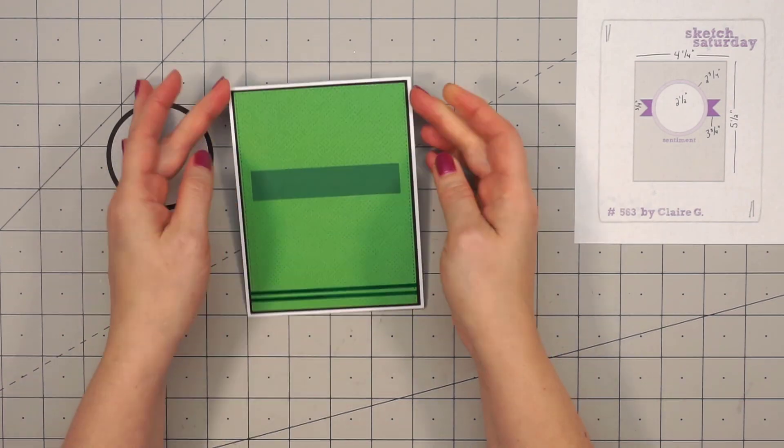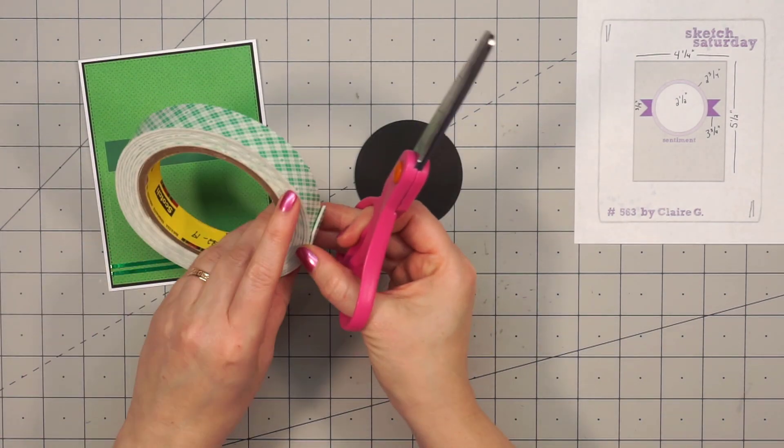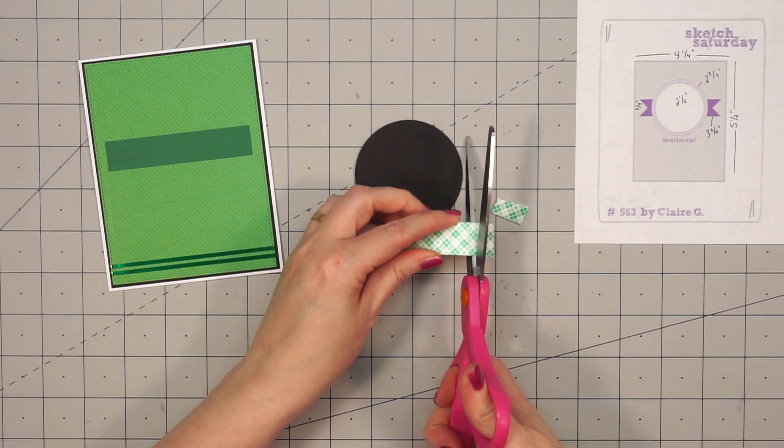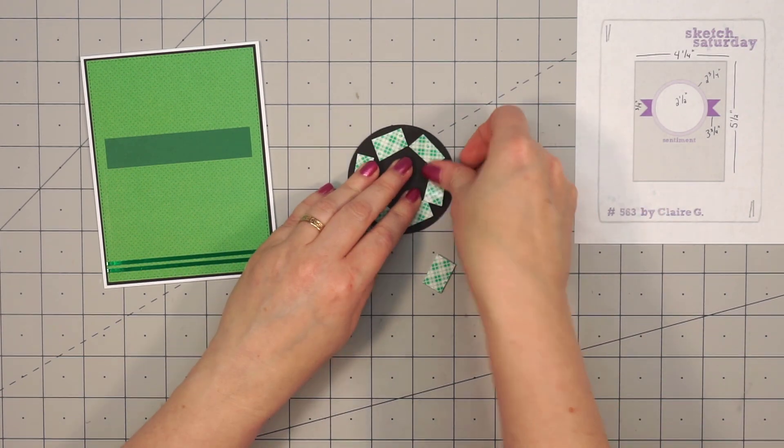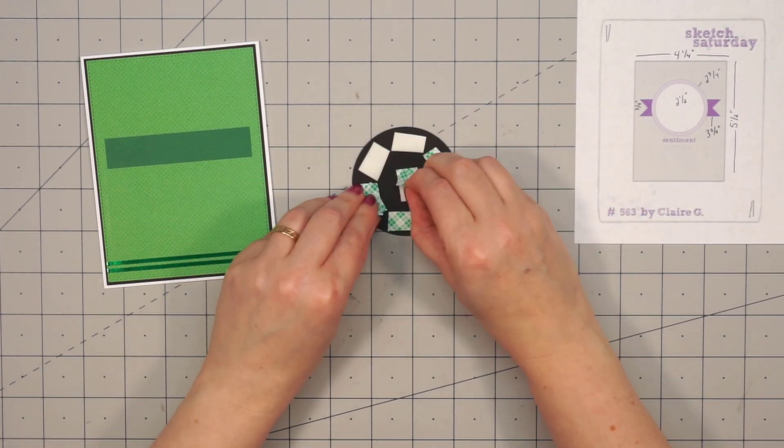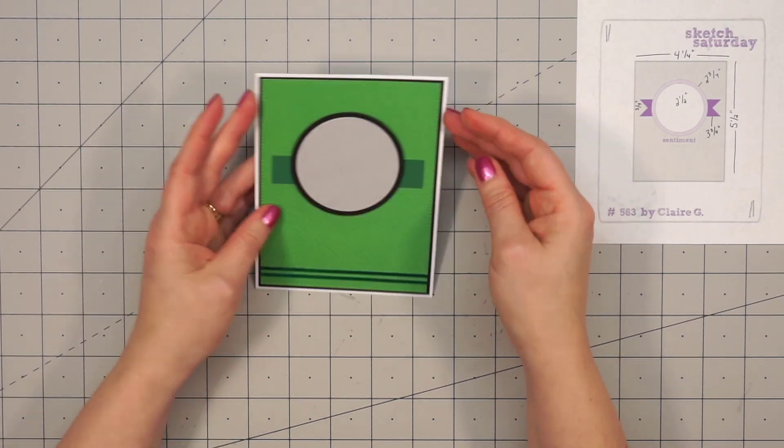So overall, this card is fairly simple, sticking pretty closely to the sketch. I just used some solid green cardstock for that strip that goes behind this circle. And I decided I'm going to pop up this circle using some foam dimensional tape so I can make sure to get really good coverage so I don't have one side sagging at all.